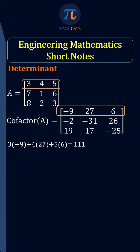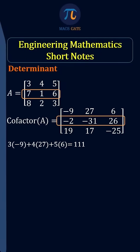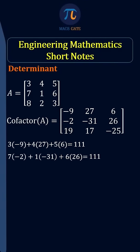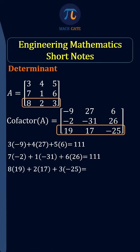We get the result 111. Now multiply the second row elements with corresponding cofactors and add — the result is the same, which is 111. Now multiply the third row elements with corresponding cofactors and add; surprisingly, the result is the same, which is 111.